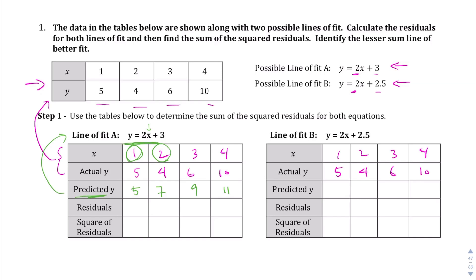Now we find the residuals by subtracting the predicted y from the actual y. Five minus 5 is 0, and 0 squared is 0. Four minus 7 is negative 3, and negative 3 squared is 9. Six minus 9 is negative 3, squared is 9. And lastly, 10 minus 11 is negative 1, squared is 1.